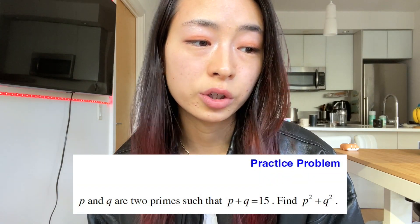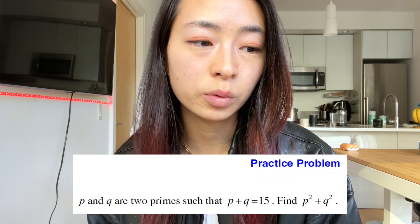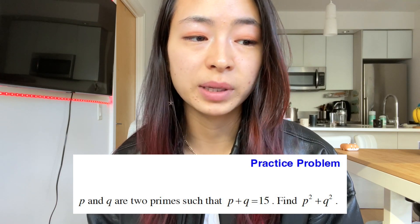Practice problem. P and Q are two primes such that P plus Q equals 15. Find P squared plus Q squared. Okay, great.